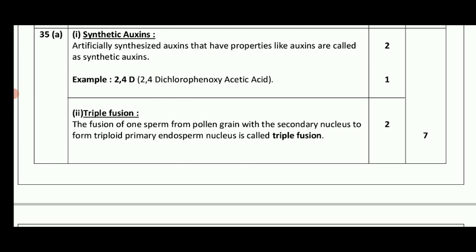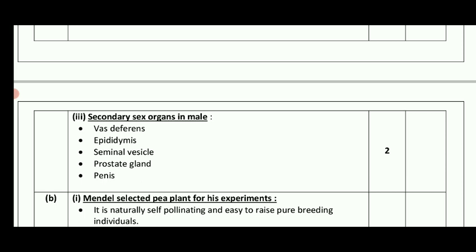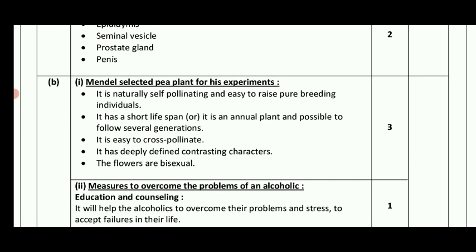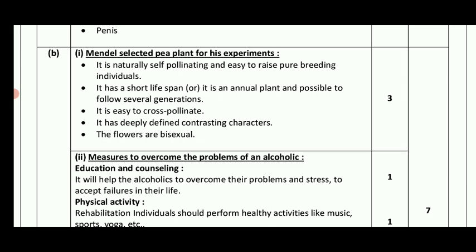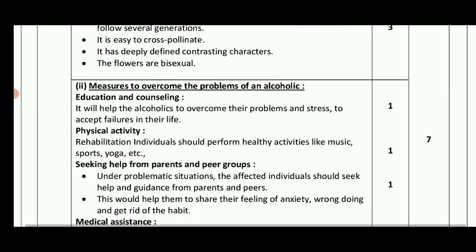Triple fusion: the fusion of one sperm from pollen grains with the secondary nucleus forms the primary endosperm nucleus — this is called triple fusion. Secondary sex organs: in male, the vas deferens. Mendel selected pea plants for his experiments — monohybrid and dihybrid crosses. Pea plants are naturally self-pollinating, easy for pure breeding, have bisexual flowers, and are easy to cross-pollinate. These are the key reasons why Mendel chose pea plants.